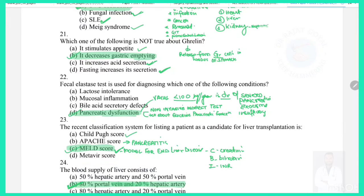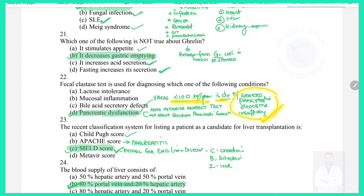Question 22: Fecal elastase test is used to diagnose which condition? It is not used for lactose intolerance, mucosal inflammation, or bile acid secretion defects. Fecal elastase test is used for pancreatic dysfunction; a value less than 100 is diagnostic of severe pancreatic exocrine insufficiency.